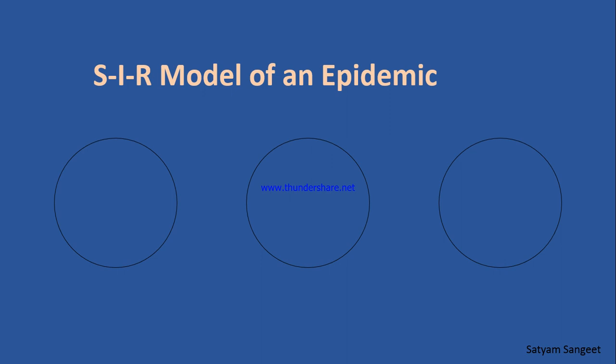We actually predict how the infection of any kind of epidemic will happen over a certain period of time. The SIR model stands for: S — susceptible, which are people in a particular area who are capable of getting infected with the virus. I — infected, those who actually get infected when they come in contact with the virus or infected people. And R — recovered, people who transition into the recovery phase.